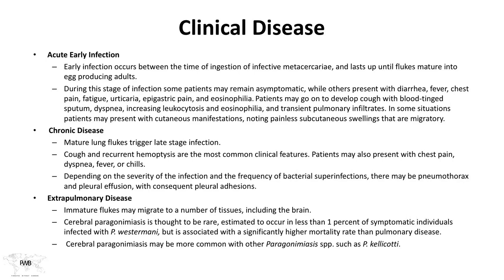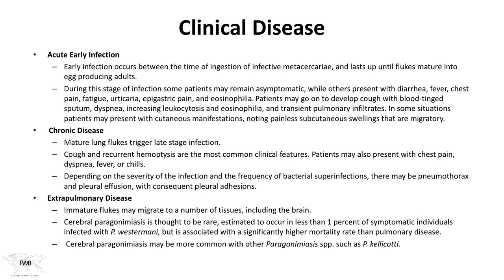As for chronic disease, mature lung flukes trigger late-stage infection with recurrent hemoptysis, chest pain, trouble breathing, fevers, and chills. Depending on severity and secondary bacterial infections, patients may develop pneumothorax, pleural effusions, or pleural adhesions. Extra-pulmonary disease can also occur — immature flukes may migrate to tissues including the brain. Cerebral paragonomiasis, though rare at about 1% of cases with Paragonimus westermani, carries a much higher mortality rate than pulmonary disease.